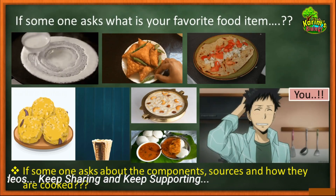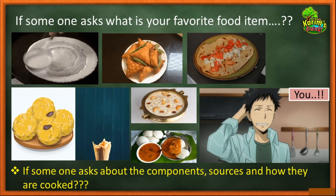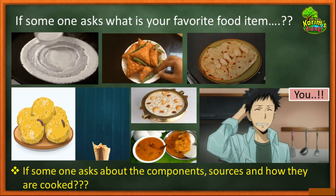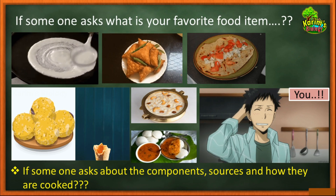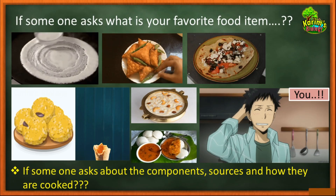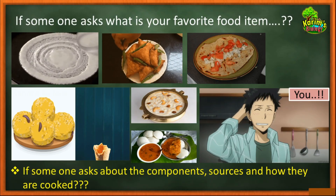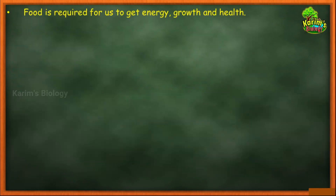Some of you may know the answers about component sources of food and how it is cooked, but most of you may not — so don't worry. In this lesson we are going to learn completely about what ingredients are used in food items, what the meaning of ingredient is, the different methods of cooking food, and the different ways of storing food items. You have been studying since primary classes that food is required for energy, growth, and to be healthy.